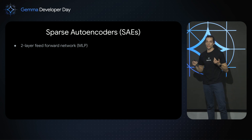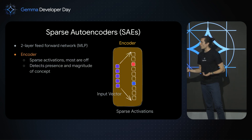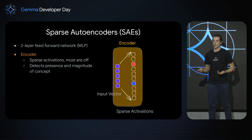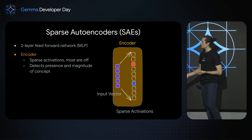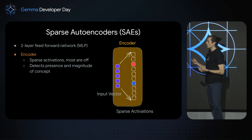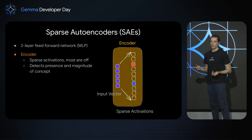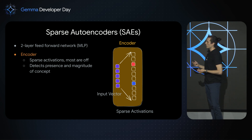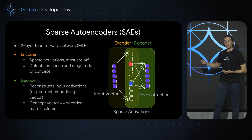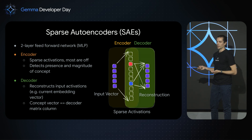Its training objective is to reconstruct the input activation. It consists of two parts: the encoder and the decoder. The encoder maps the input activations into a higher-dimensional space by applying a linear transformation and then an activation. In this new space, we only want a few dimensions to be non-zero at any given time. Each hidden dimension corresponds to a particular concept and indicates whether that concept is active and how strongly it is active. The decoder then takes this sparsely activated vector and uses it to reconstruct the original input activations.